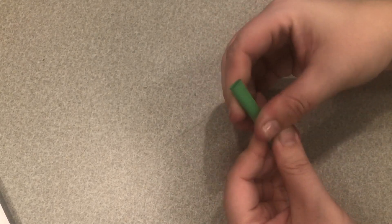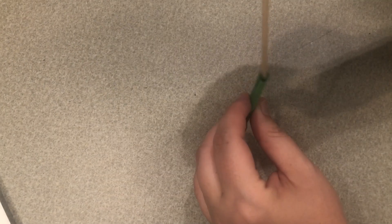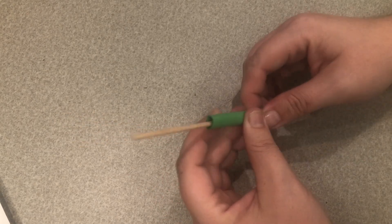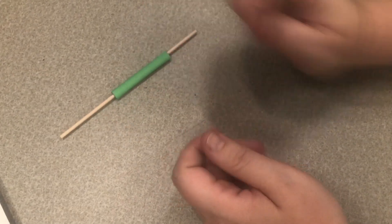Press down that seal and then we still are going to have a hole that our dowel rod can fit through. And then we'll set those aside for just a moment.